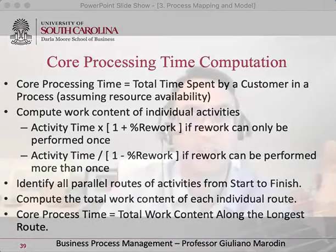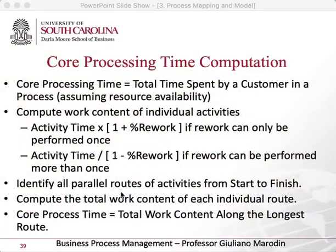To verify the math: one unit took 10 minutes because it passed through twice, and the next four units took five minutes each. So 10 plus 5, 5, 5, 5 equals 30, divided by 5 units, gives six minutes on average. It's the same result whether we apply the formula or count each unit individually.